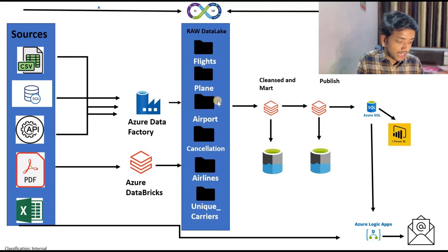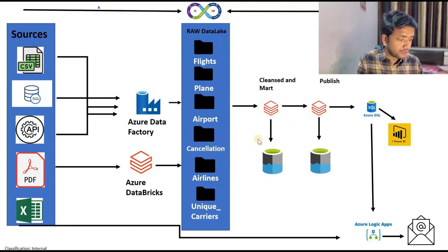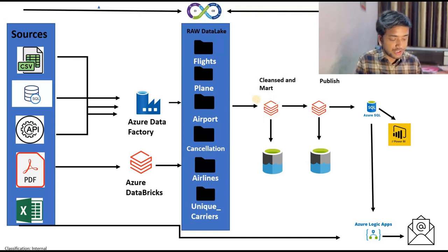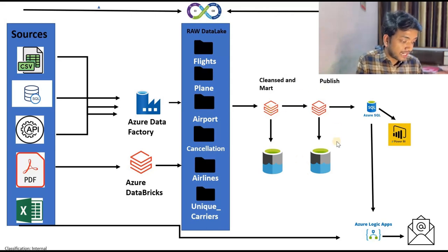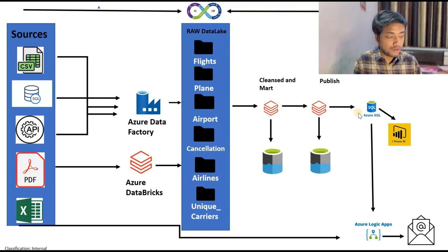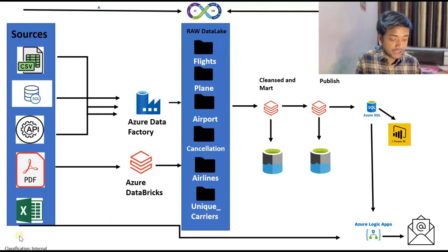After that, I cleansed the data, removed nulls, did some checks, and put it into the trans data lake. Then I created business logic, wrote marts, created dimension and fact tables, and put it into the mart data lake. After that, once the data was ready, I published it into the final layer — the data lake as well as SQL tables or SQL data warehouse.